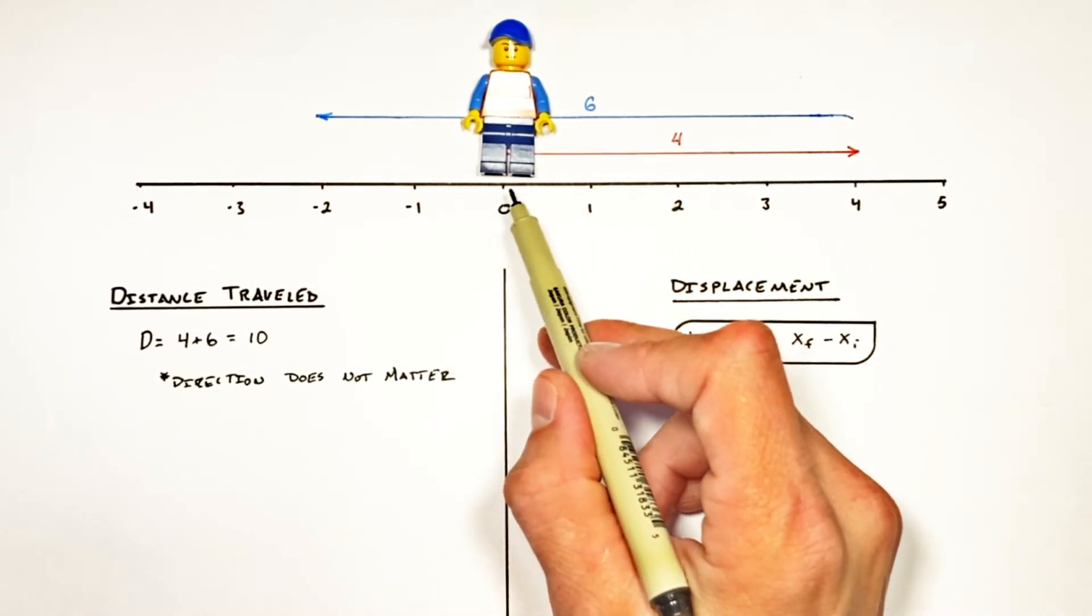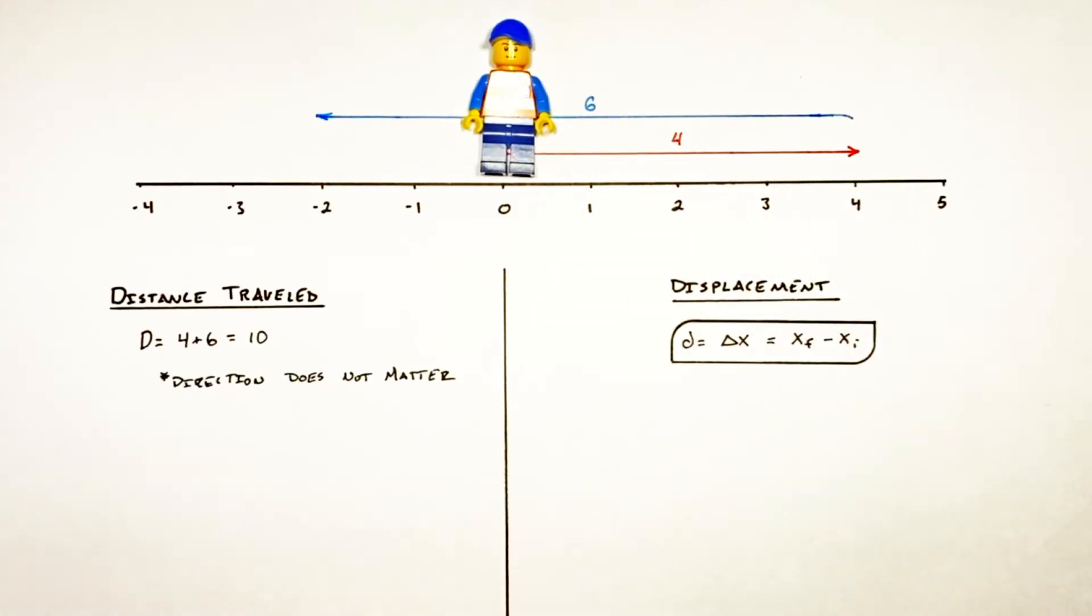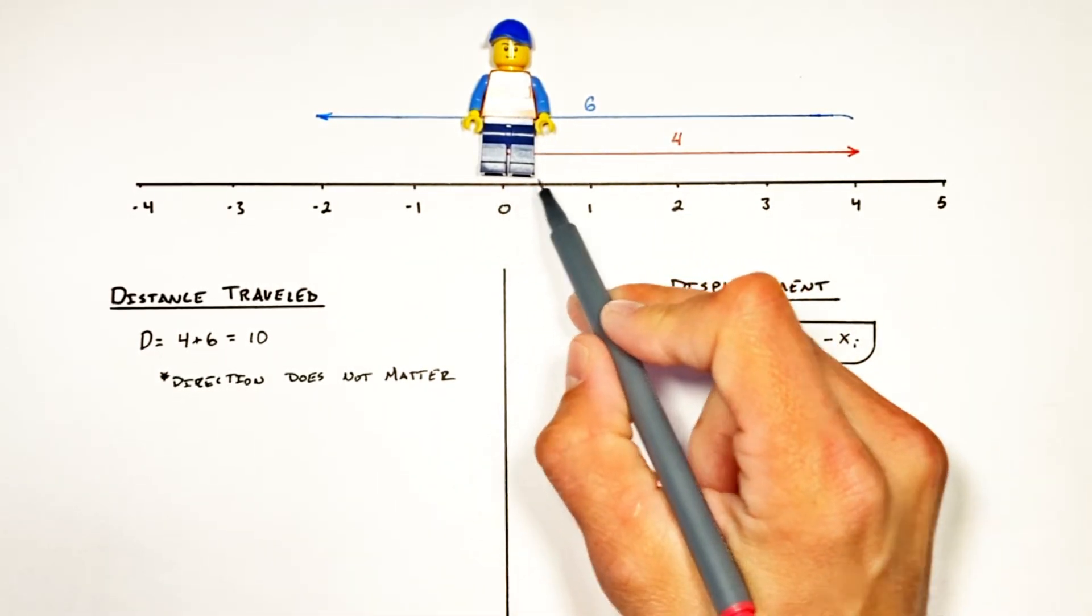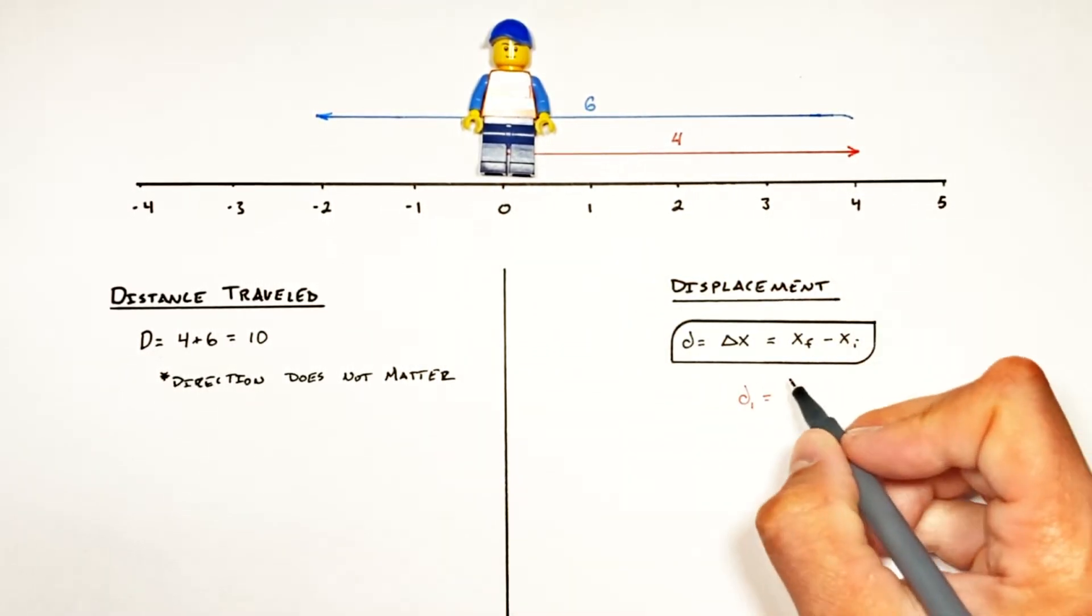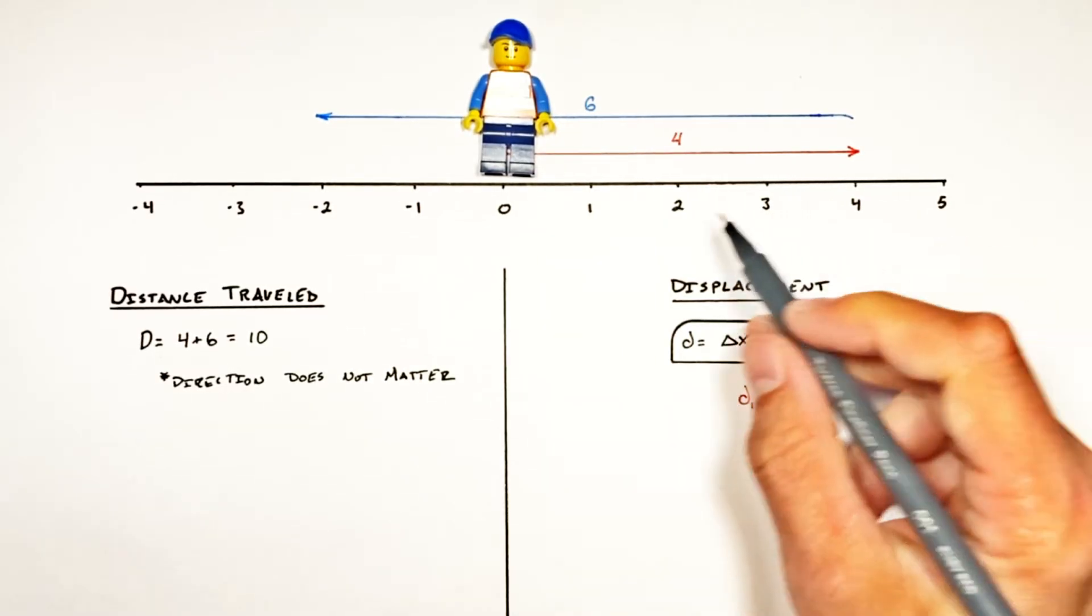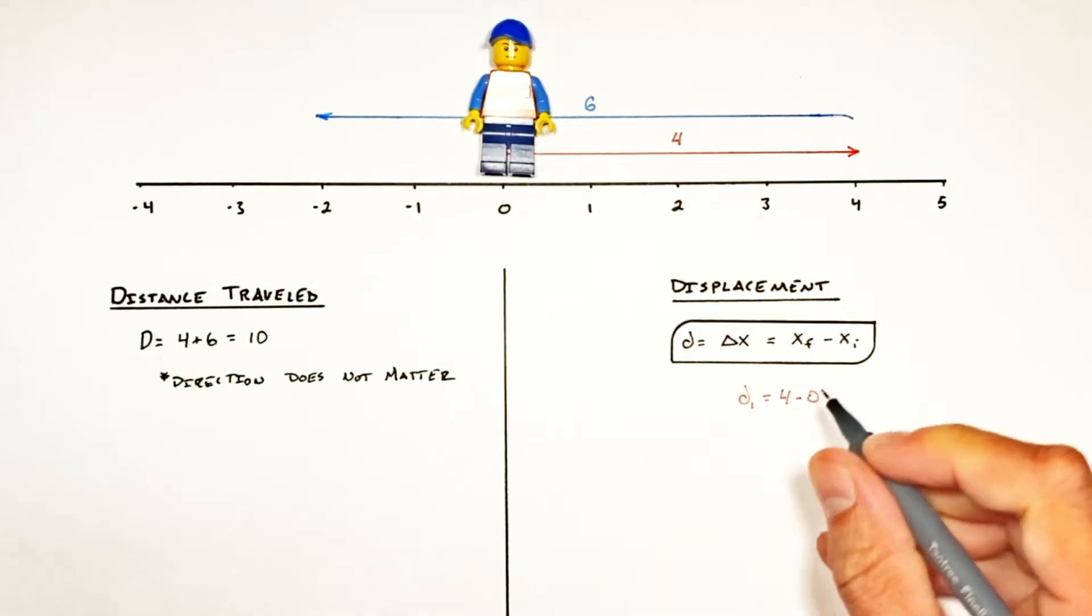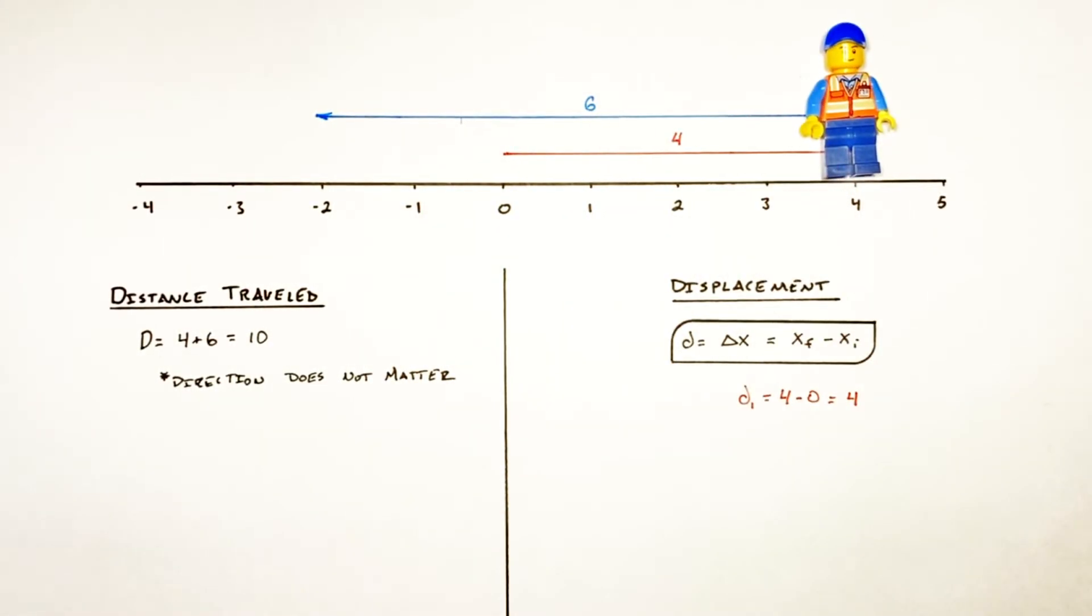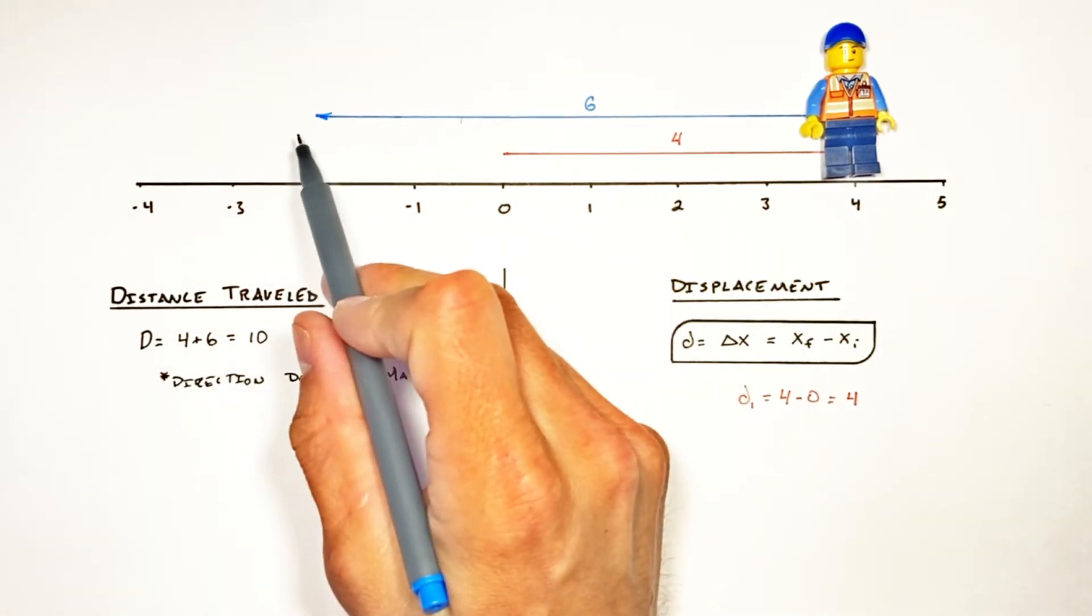So we're going to look at the displacement just over this first little phase of motion. So the displacement here over that first phase of motion, I'll call that D1, is going to be equal to his final position that was four minus his initial position at zero. So four minus zero, of course, is four. And that got him to right there.